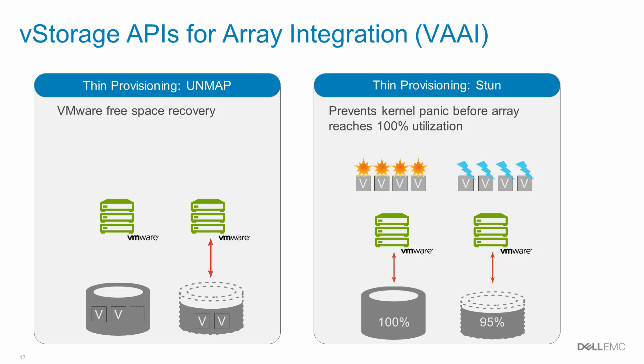Stun enables the SC-Series array to send a Stun command to virtual machines requesting additional blocks of storage after an available capacity threshold has been crossed. The Stun command gracefully pauses the virtual machine and its applications until additional capacity can be added to the array. SC-Series arrays support both Unmap and Stun.